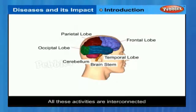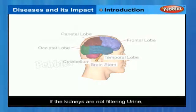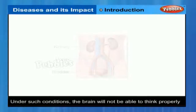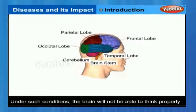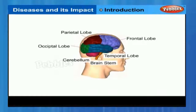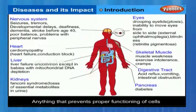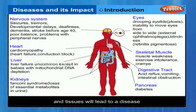For example, if the kidneys are not filtering urine, poisonous substances will accumulate. Under such conditions, the brain will not be able to think properly. For all these interconnected activities, energy and raw material are needed from outside the body. In other words, food is a necessity for cell and tissue functions. Anything that prevents proper functioning of cells and tissues will lead to a lack of proper activity of the body, causing a disease.